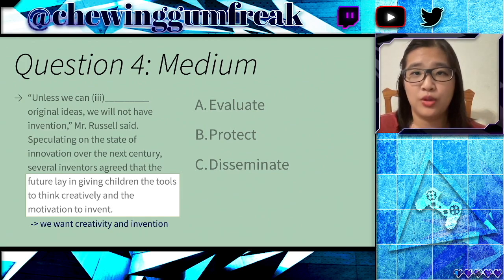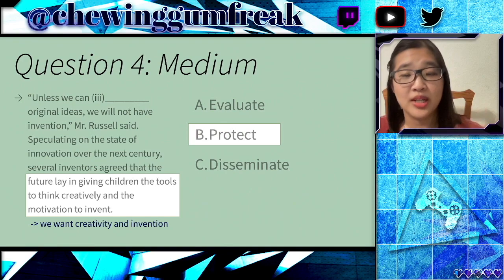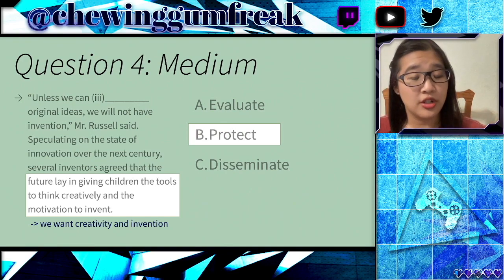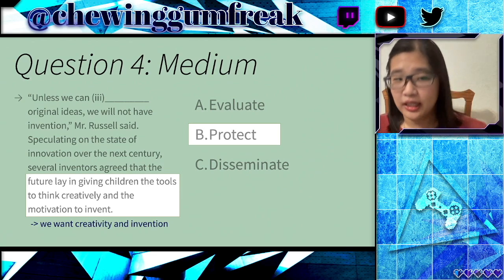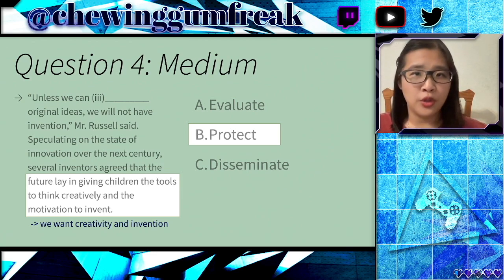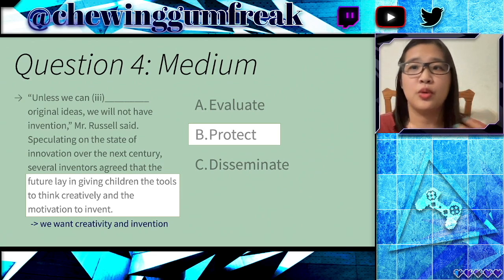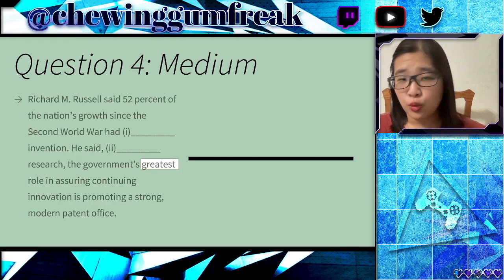For this blank, I would choose B for 'protect.' We want to protect original ideas, give them patents, and allow people to invent and have that motivation to continue to make new things.